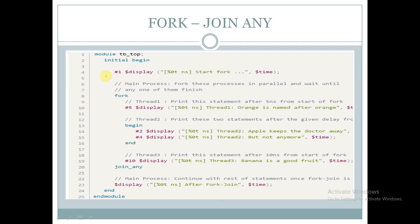Let us see an example related to fork-join-any. We have a module called tb_top and within an initial begin block we are displaying the statement at one time unit. We have a fork-join-any block with three threads: thread one, thread two, and thread three. Thread one has one display statement, thread two has two display statements, thread three has one display statement. In fork-join-any, once any thread completes its execution it will come out of the fork-join-any block.